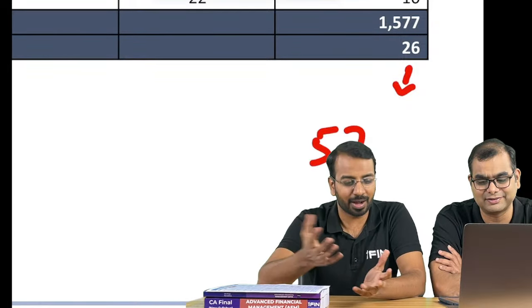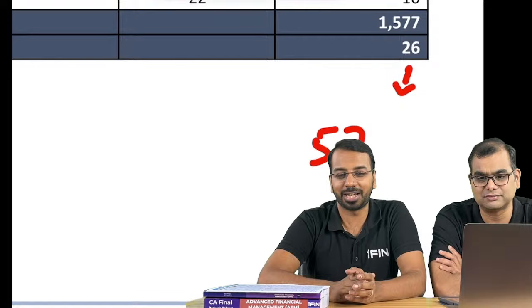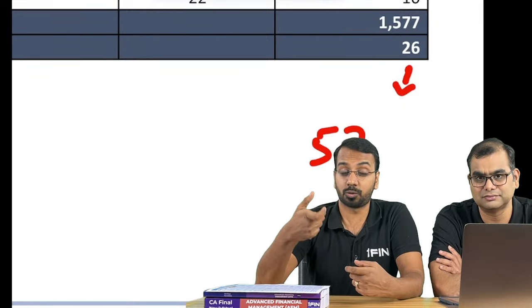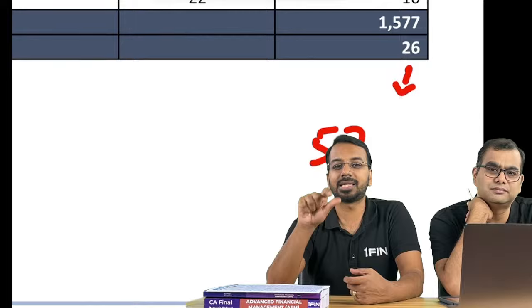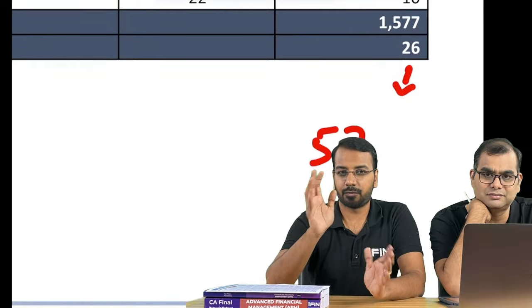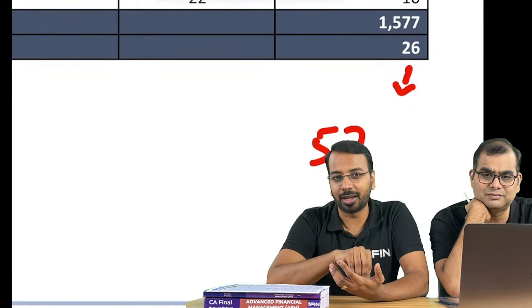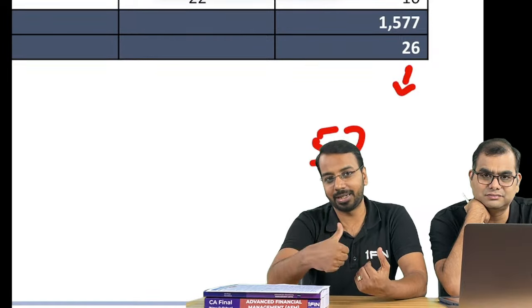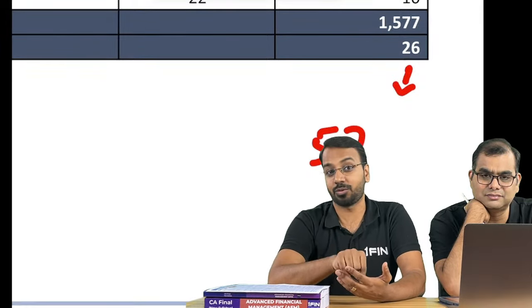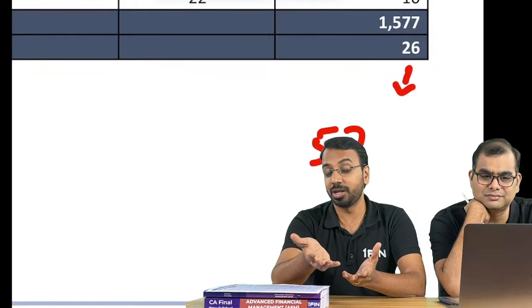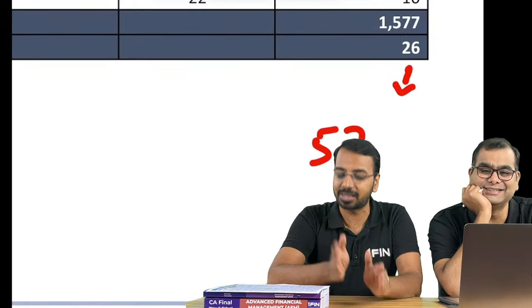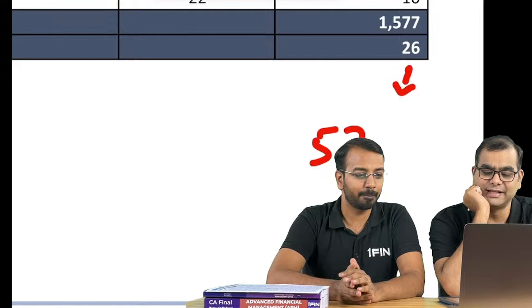One more aspect: to those students who have written CA inter in August 23 and they have passed and they're eligible to write May 24, if you are watching this video, four or five months is a very short period of time to prepare for CA final. I would suggest that you write the examination in November 24 and not in May 24. This is for CA inter November 23 past students. If you have your juniors who are planning, being overconfident that they will finish it off, that is not going to happen. Let us accept the realities and plan accordingly.